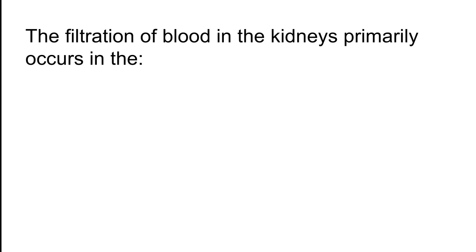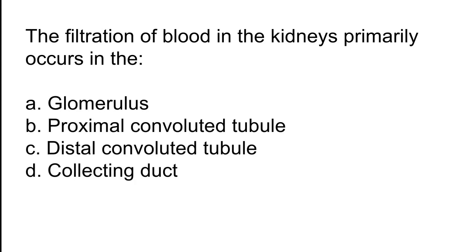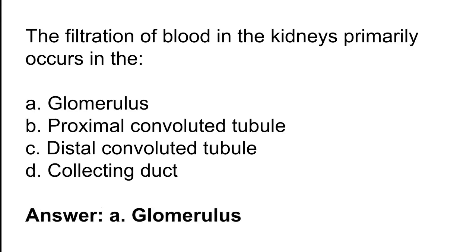The filtration of blood in the kidneys primarily occurs in which structure? Options: A) Glomerulus, B) Proximal convoluted tubule, C) Distal convoluted tubule, D) Collecting duct. The correct answer is option A. The filtration of blood in the kidneys primarily occurs in the glomerulus.